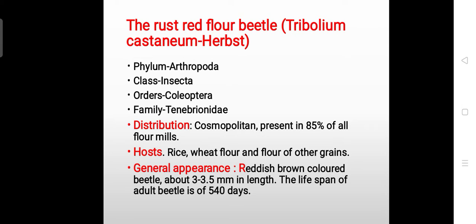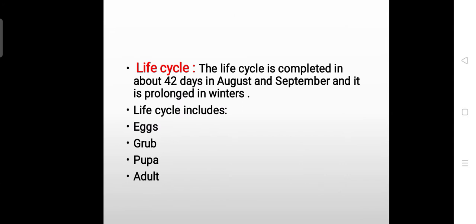Its hosts are rice, wheat flour, and flour of other grains. Generally, it appears reddish brown with a length of 3 to 3.5 mm. The total lifespan of adults is 540 days. The life cycle is completed in 42 days during August and September, and is much longer in winters.